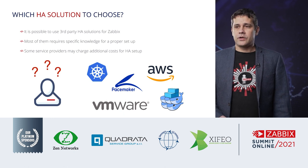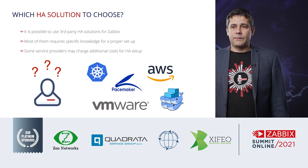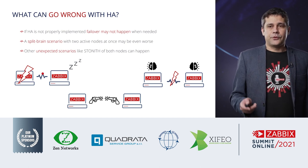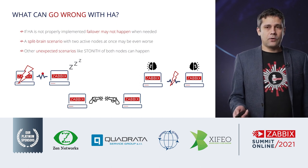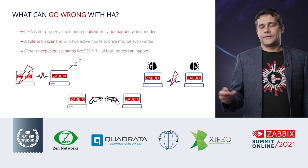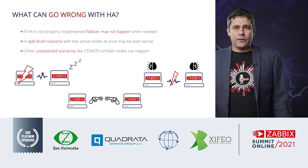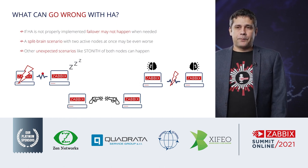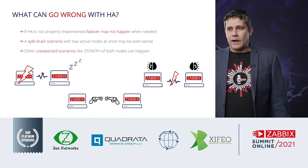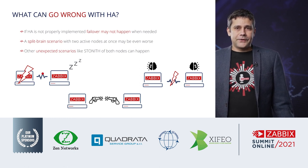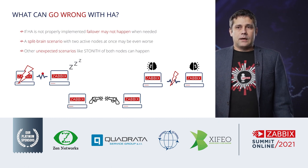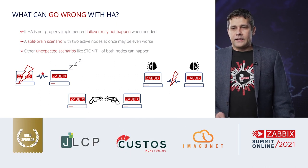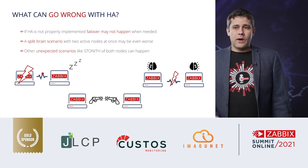It is always a challenge which solution will be best and how to set it up properly. This is very important: if you are setting up high availability, it must be done properly, because if something goes wrong it may be even worse than not having high availability at all. Maybe the automatic failover won't happen and you'll be left with a non-working system. Or even worse, a split brain will happen — two Zabbix servers doing the same thing, sending double alerts, creating a mess in the database, or both nodes taking over and basically killing each other.